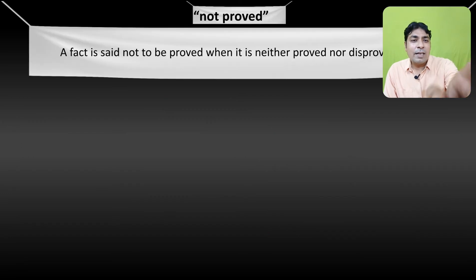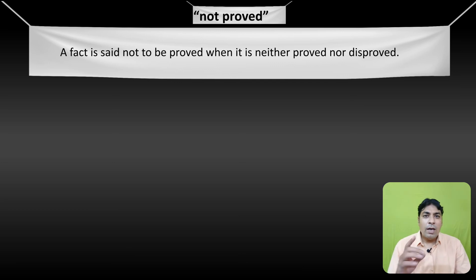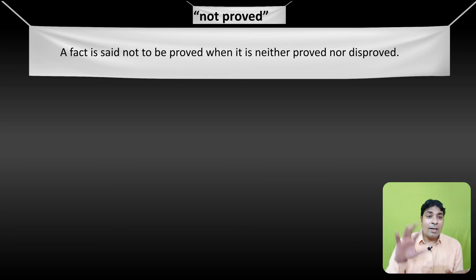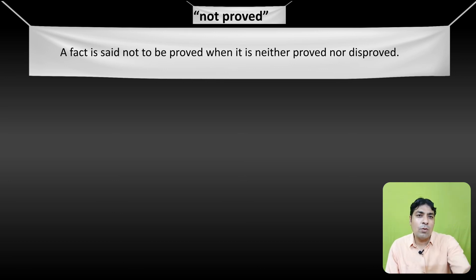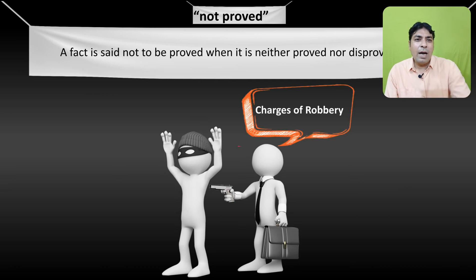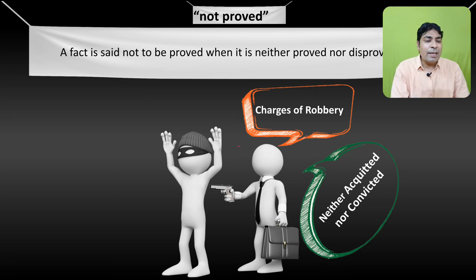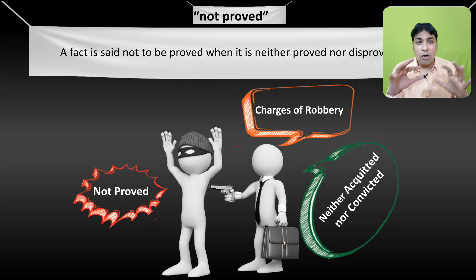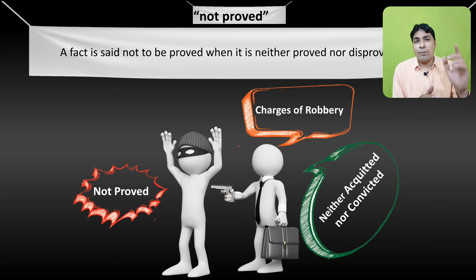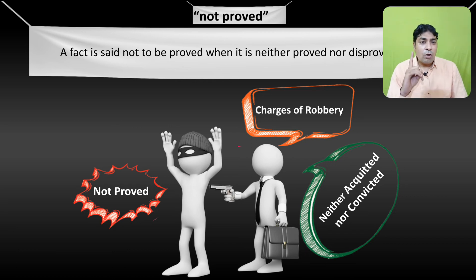The third definition is definition of not proved. A fact is said not to be proved when it is neither proved nor disproved. Aisa fact jo na to prove hua, na disprove hua — iska matlab yeh hua ki na to accused ko acquit kiya gaya, na to convict kiya gaya. For example, charges of robbery have been labeled against a particular person, but he is neither acquitted nor convicted — he has been discharged by the court of law. It means the fact is not proved.